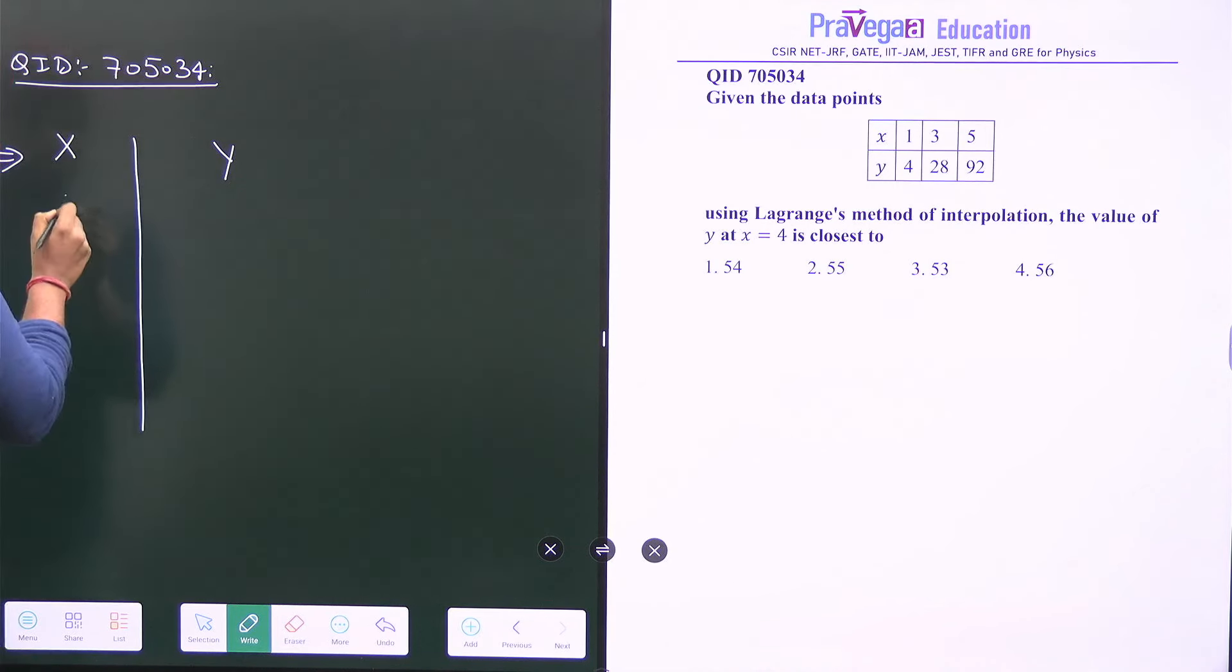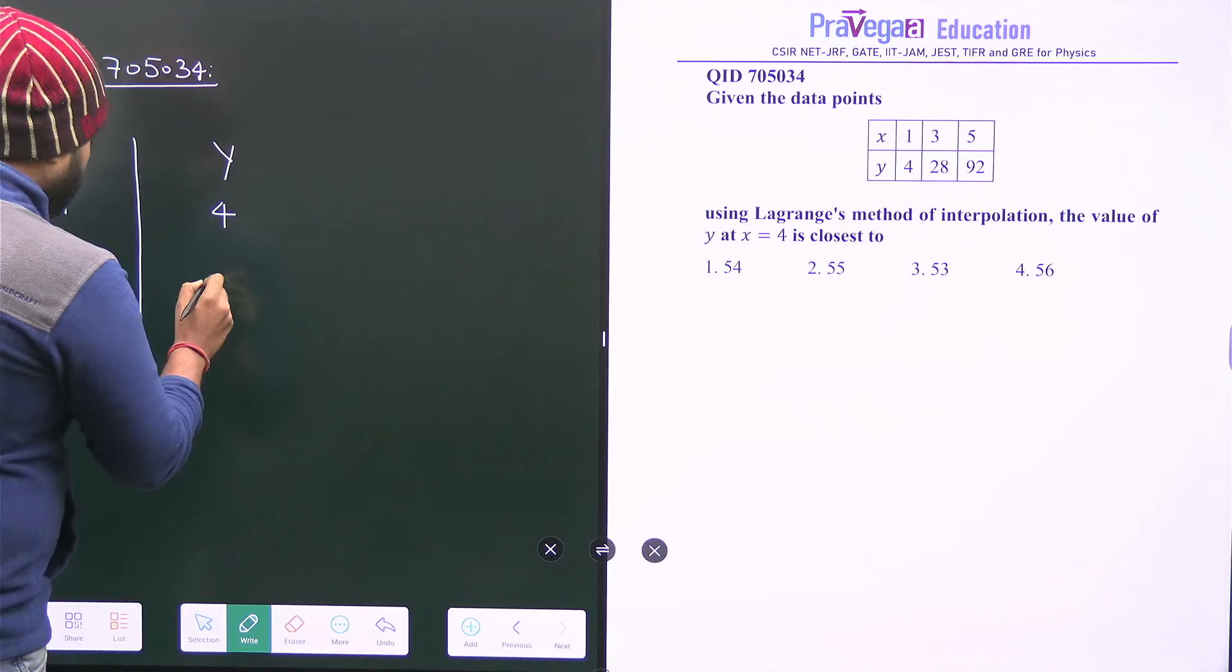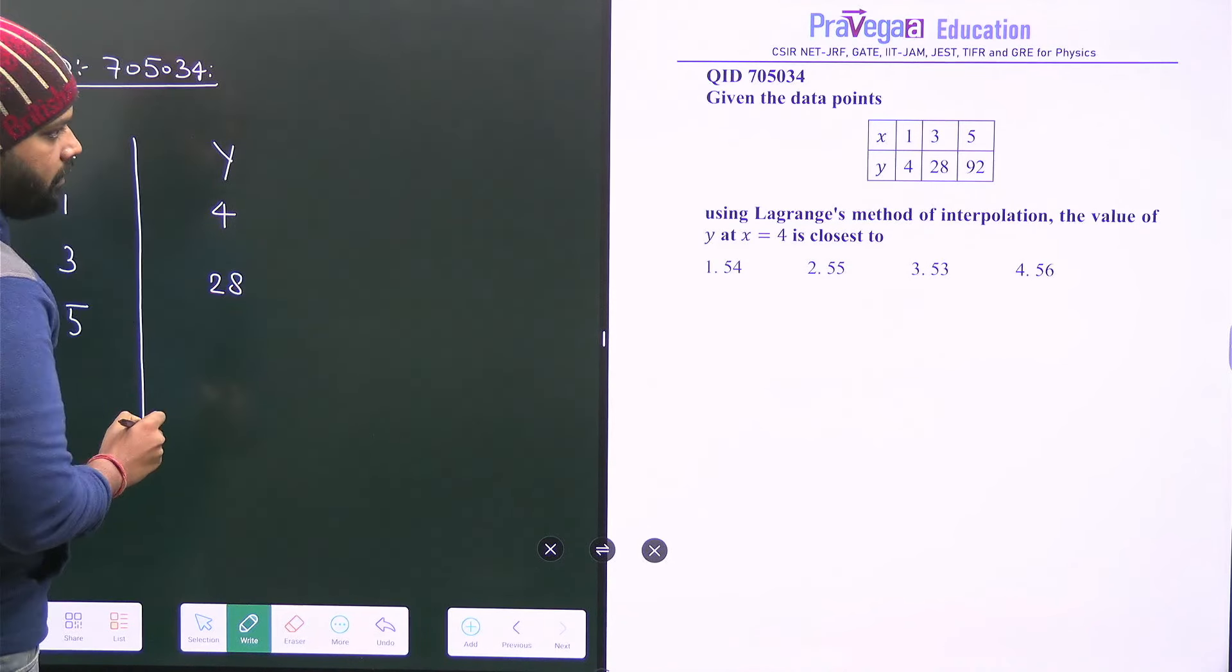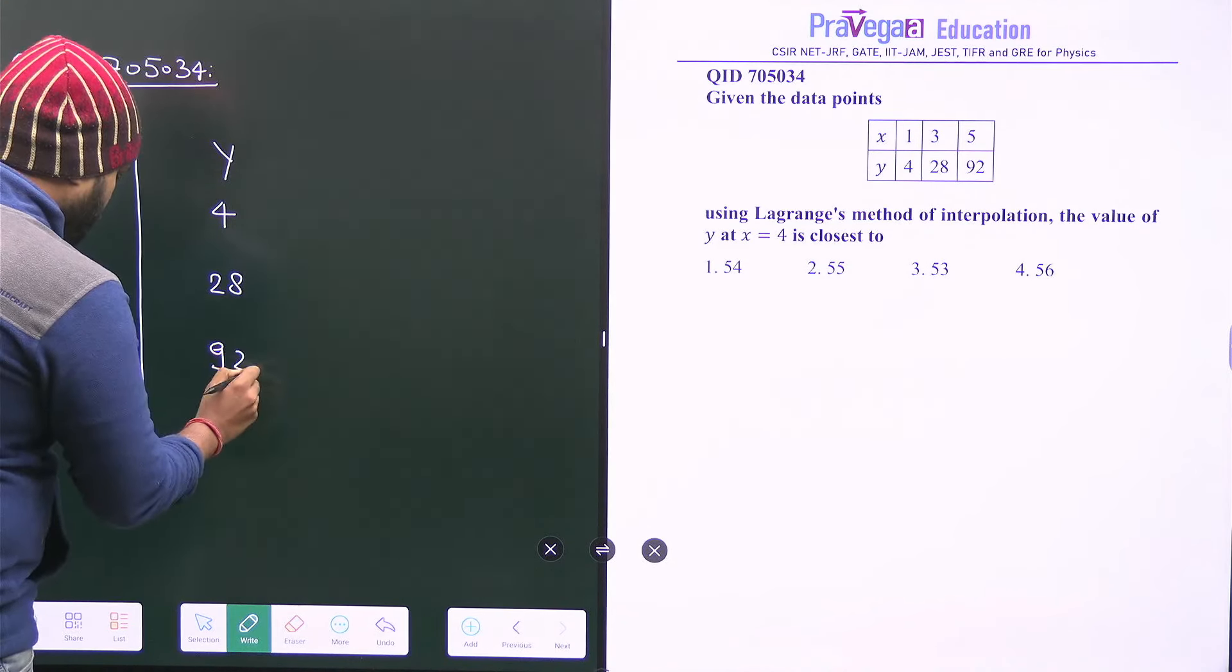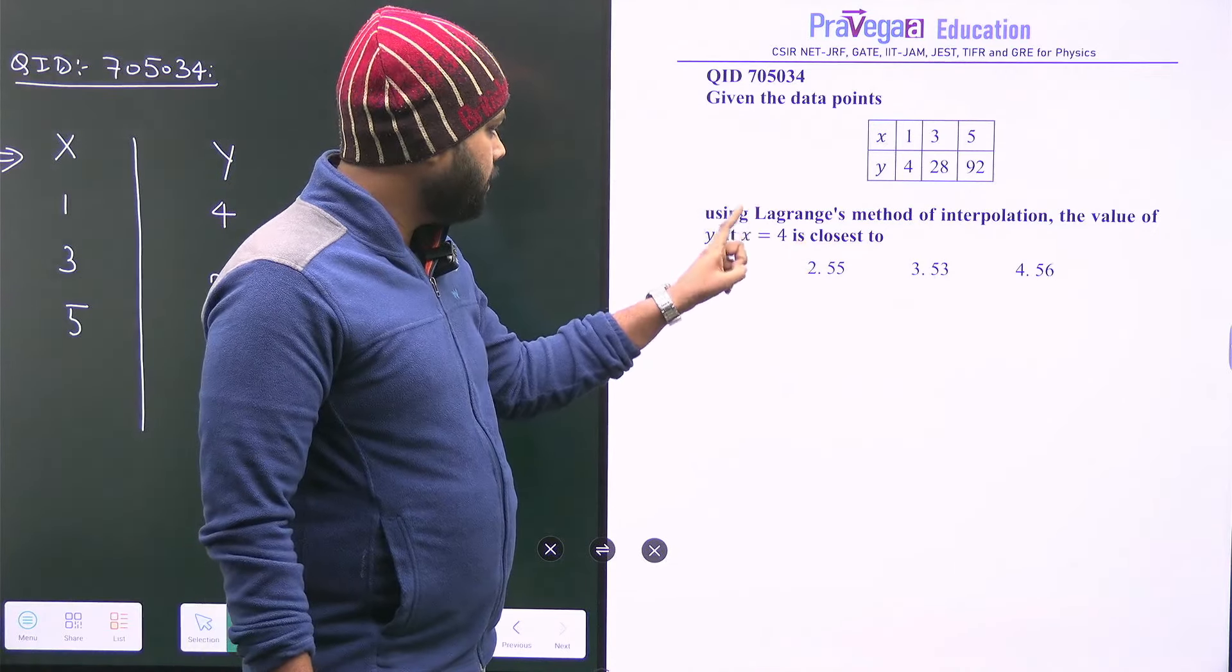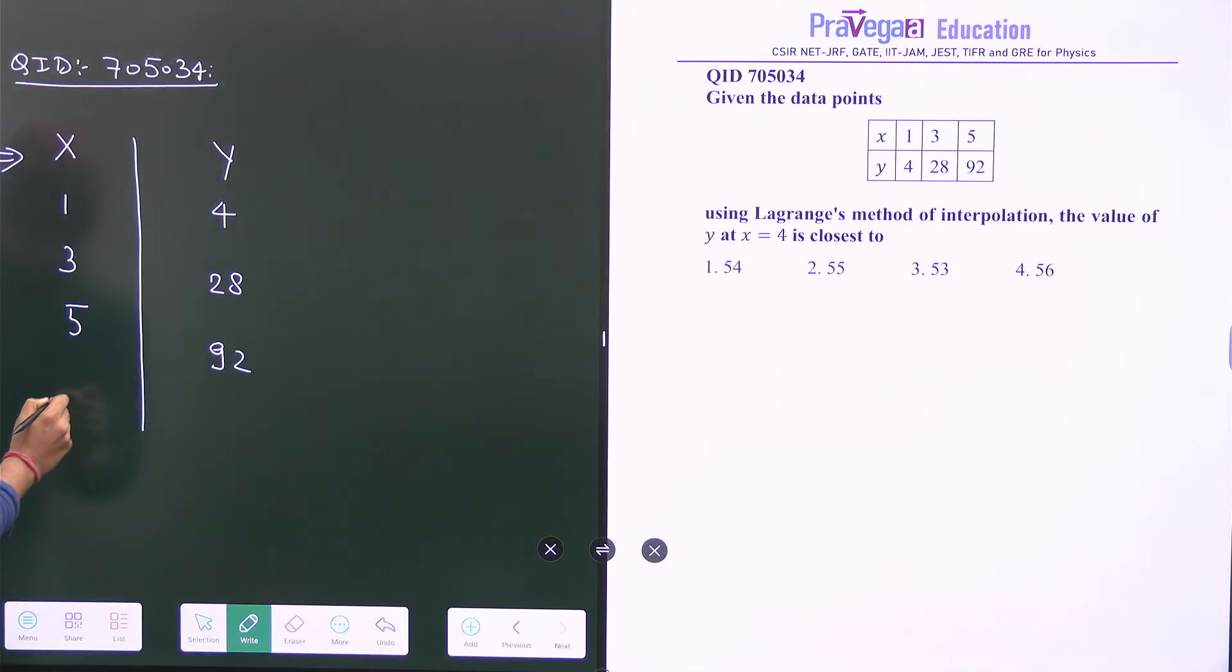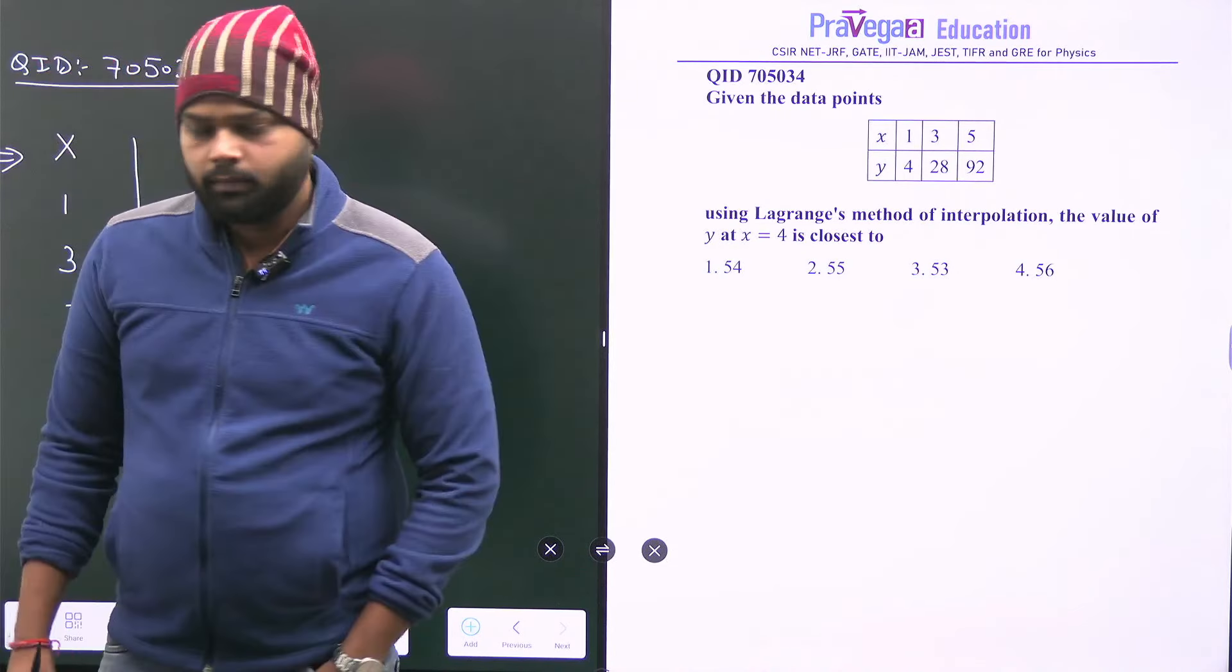So this is 1, 3, 5 and on this side is 4, 28, and 92. And the question is you have to find the value of y at x equal to 4. So at x equal to 4 we have to find the value of y. This is our question.